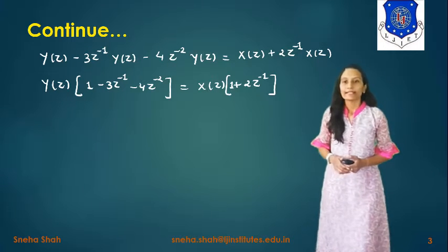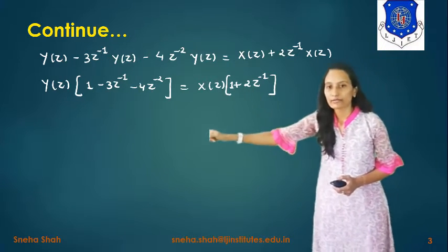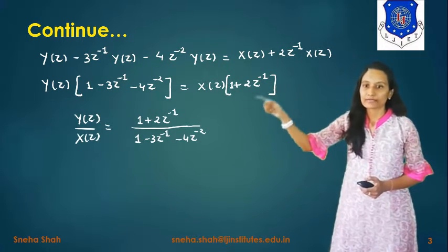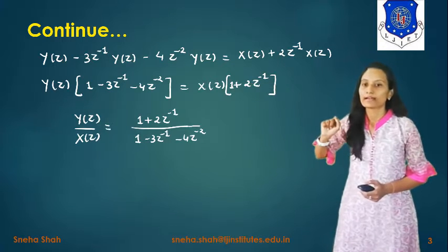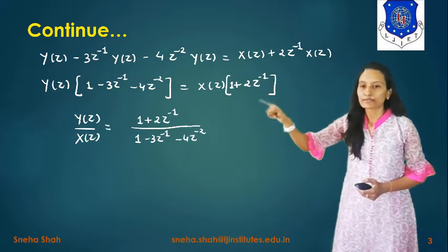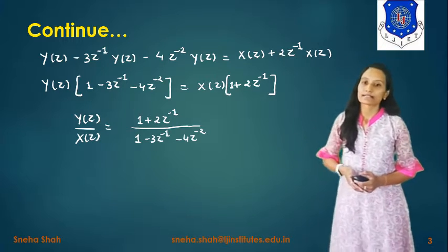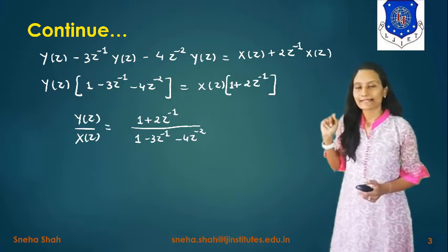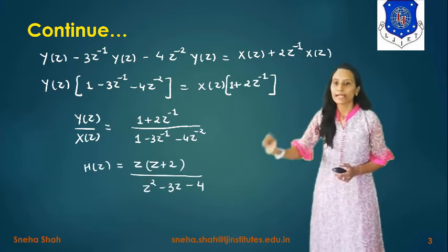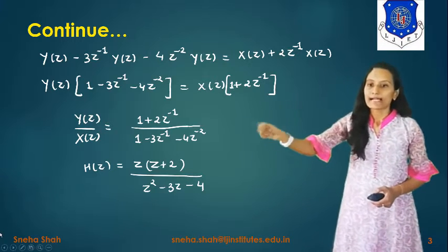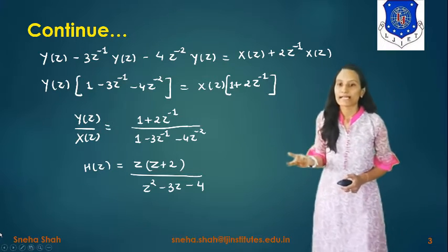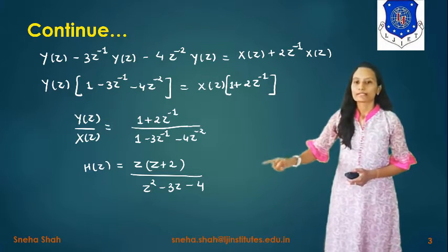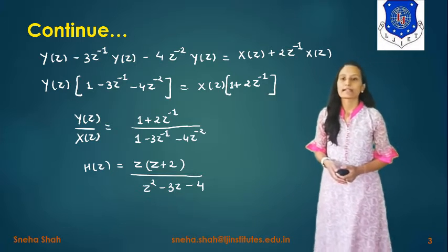Finding the value of Y(z)/X(z): X(z) goes to the other side, giving H(z) = Y(z)/X(z) = (1 + 2z⁻¹) / (1 - 3z⁻¹ - 4z⁻²). Converting the z⁻¹ terms into the form of z, the expression becomes H(z) = z(z + 2) / (z² - 3z - 4).